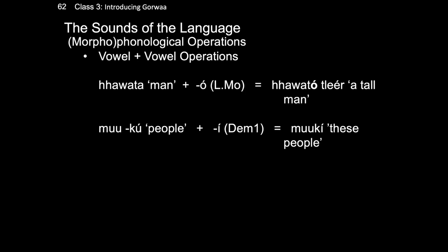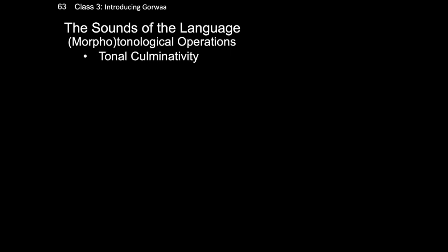For example, the noun hawata, meaning men, when it occurs with its linker morpheme — a high-toned O — the A-O combination is realized as O. When the final U of the linker in muku, meaning people, combines with the E vowel of the demonstrative, the combination is realized as E. Similar patterns exist for tones occurring together, subsumed under the umbrella term tonal culminativity — because basically one tone can manifest on the word, it is the tone of the final morpheme that determines the overall surface realization of the word.